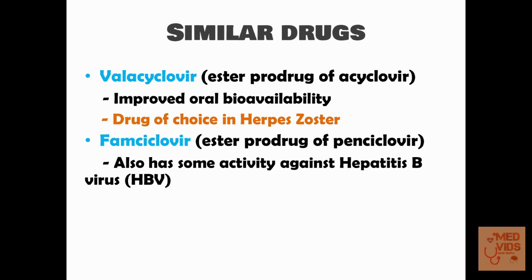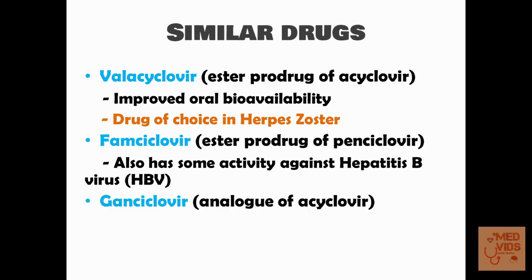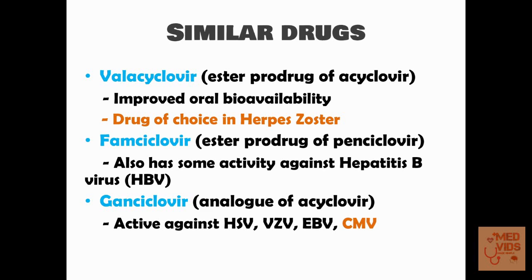In addition to being active against herpes viruses, famciclovir is also active against hepatitis B virus. Ganciclovir is an analog of acyclovir. It is active against herpes simplex virus, varicella zoster virus, Epstein-Barr virus, and cytomegalovirus — unlike acyclovir, which is not so active against cytomegalovirus. Ganciclovir is mostly taken up by cells infected with cytomegalovirus. An important toxicity associated with ganciclovir is bone marrow toxicity, as it targets precursor cells of the bone marrow.